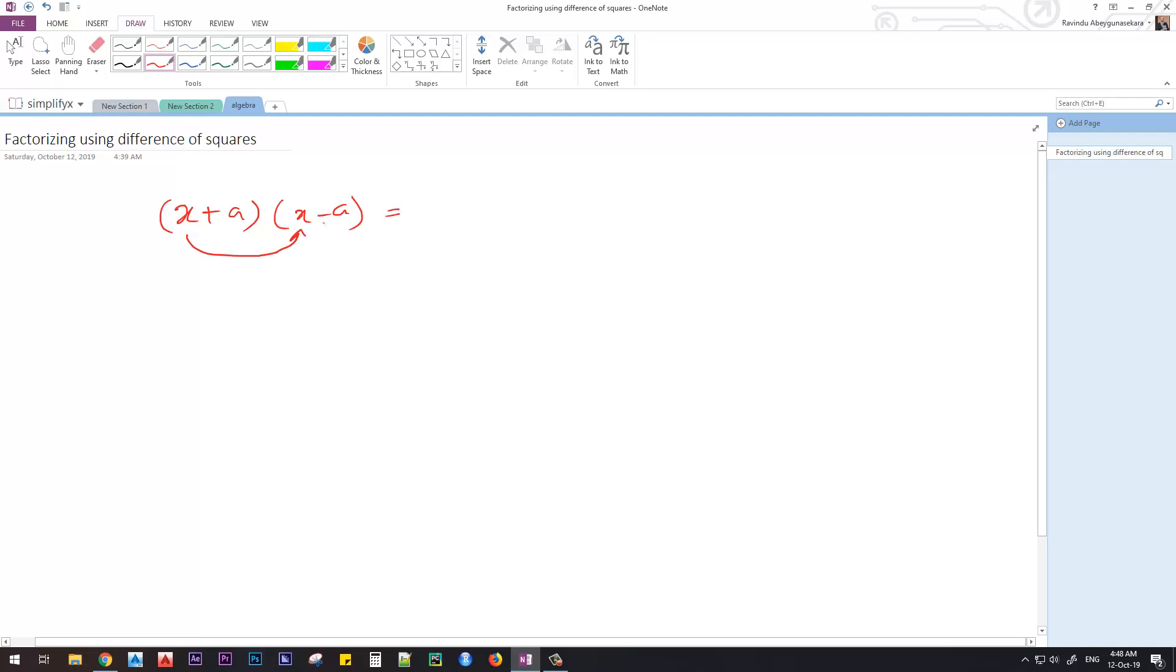This X with X, that is X squared, then this X with negative A, that is negative AX, then this A with X here, so that is positive AX, then this A with negative A, that becomes negative A squared. So the AX terms cancel out, and we get the result as X squared minus A squared.